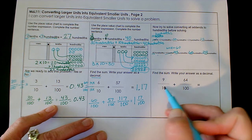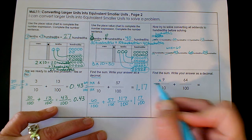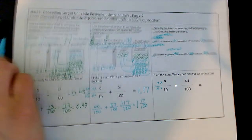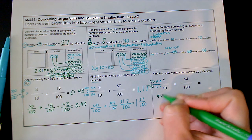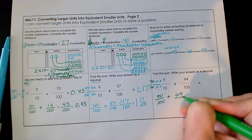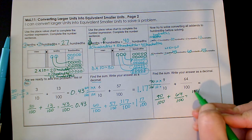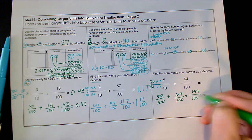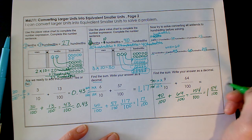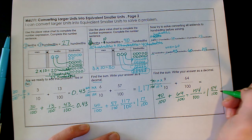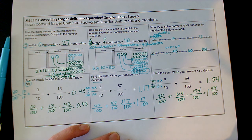Let's do the same for this one. Nine tenths plus sixty-four hundredths — which one am I going to change? I'm going to convert the nine tenths by multiplying by ten: nine times ten is ninety, and ten times ten is a hundredth. So I have ninety hundredths plus sixty-four hundredths, which equals one hundred and fifty-four hundredths. As a mixed fraction that's one and fifty-four hundredths, and as a decimal that's 1.54.